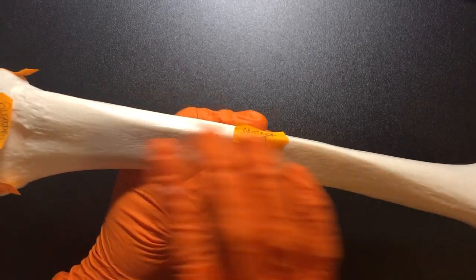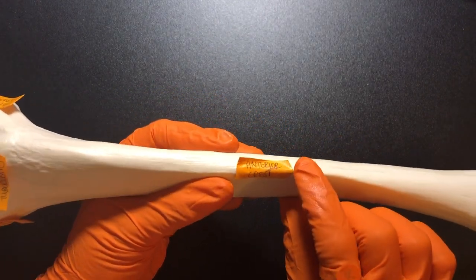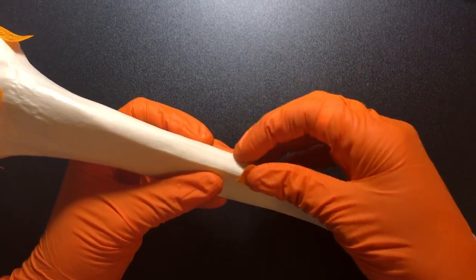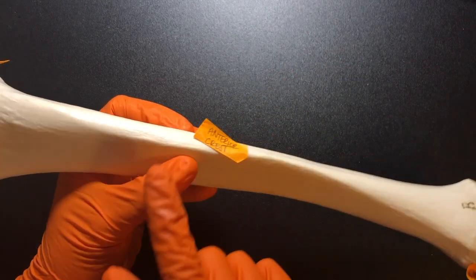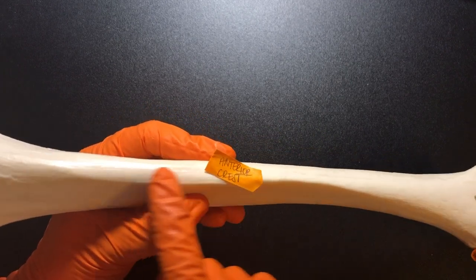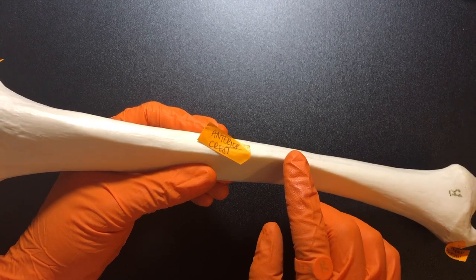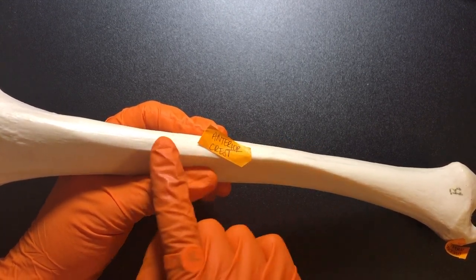On the anterior side of the shaft of the tibia, we have this anterior crest. It's also referred to as the anterior margin or anterior border. This is commonly known as your shin bone. So if you've ever had shin splints or you've gotten a shinner or something like that, this is the bone. You can really easily palpate this on your own body.